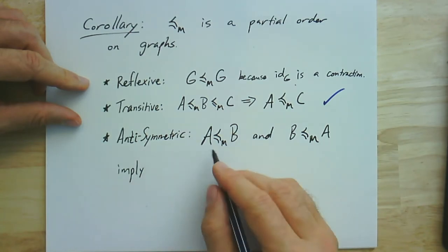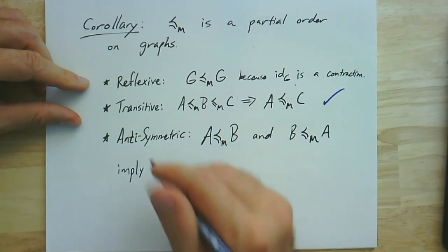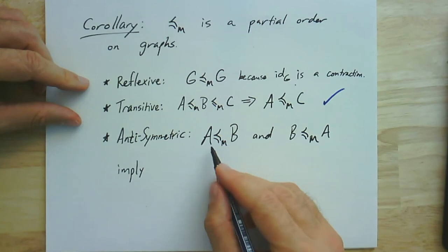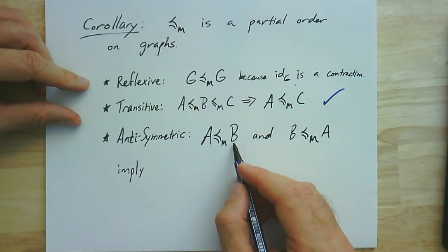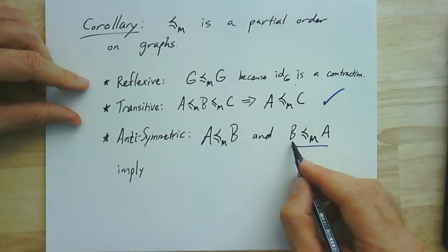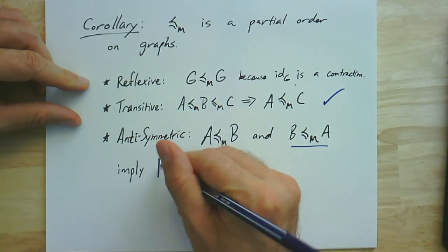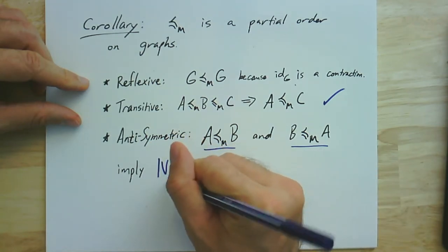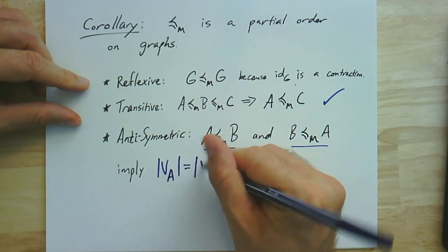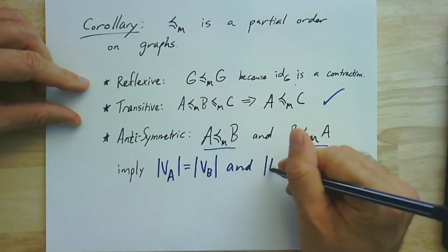So here we have this relation here will imply that the number of vertices in A has to be less than or equal to the number of vertices in B. But this also means over here that the number of vertices in B is less than or equal to the number of vertices in A. So these two together imply that the vertices in A, the number of vertices in A, is equal to the number of vertices in B. And the same holds for the edges as well.